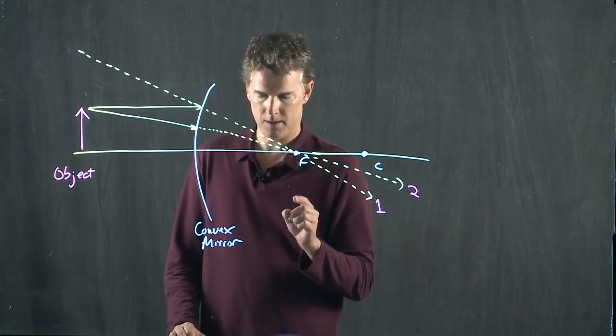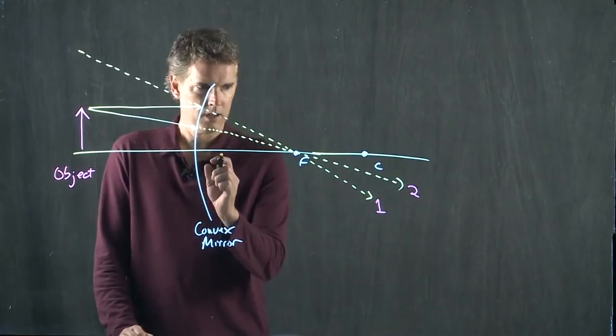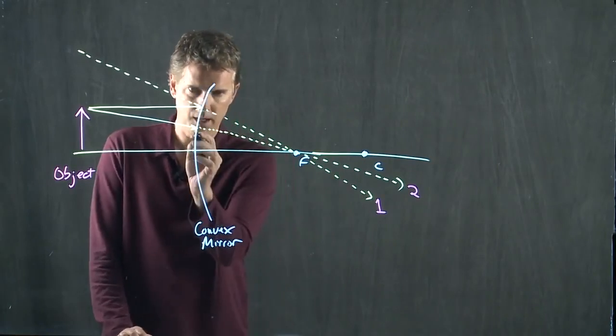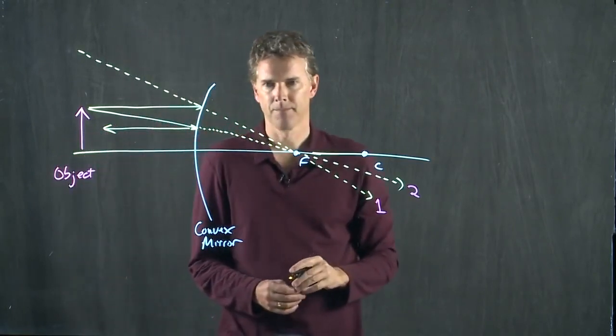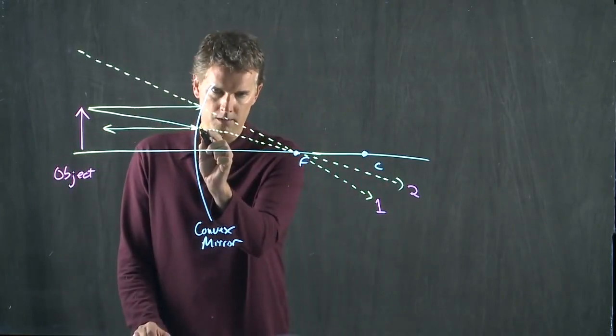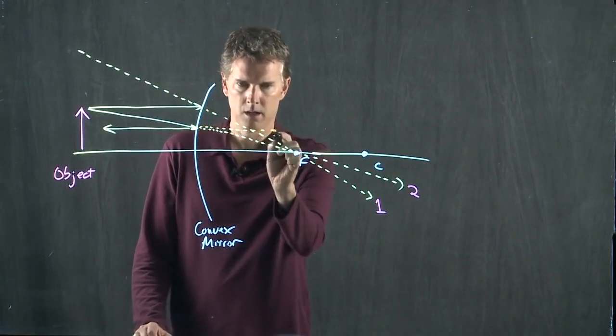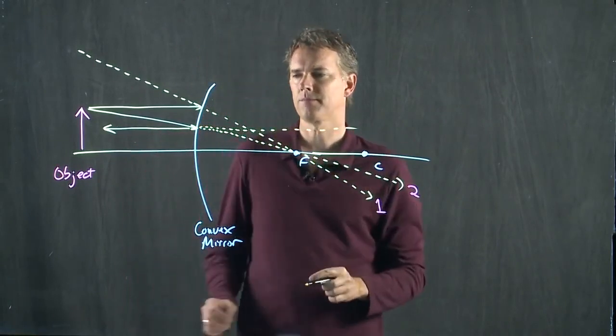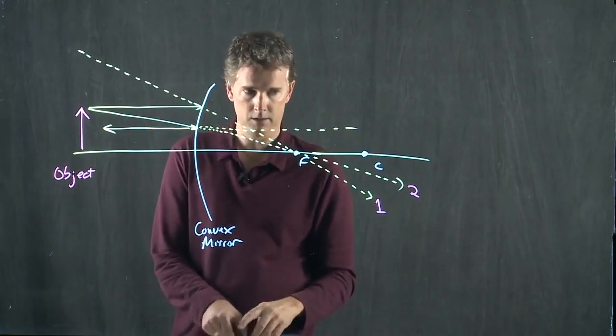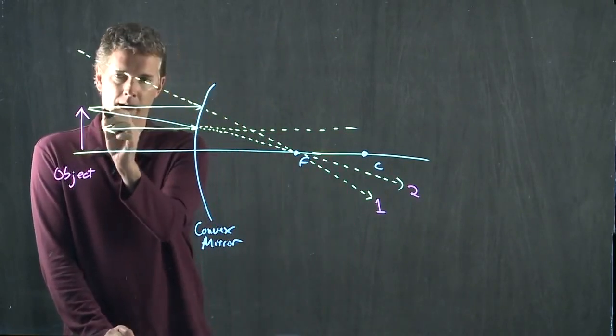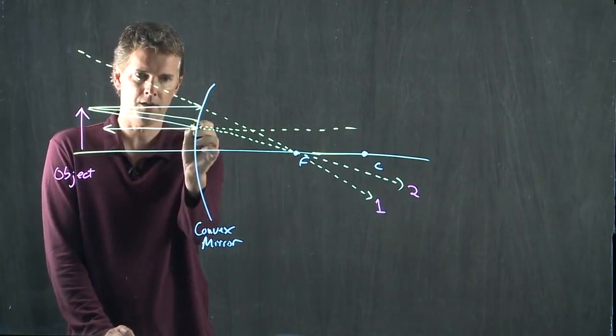That one looks good. Ray three is going to be the hard one to draw. Let's talk about ray two. Ray two bounced off and went there, so it looks like it came from there. Ray three is the one that goes through the center.